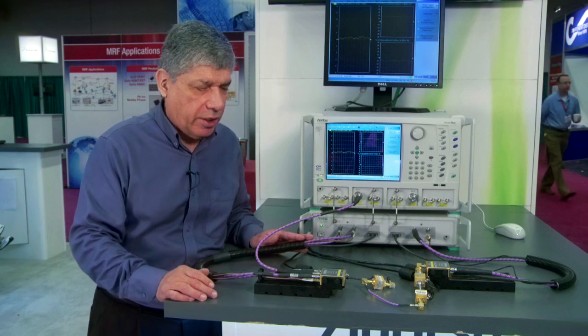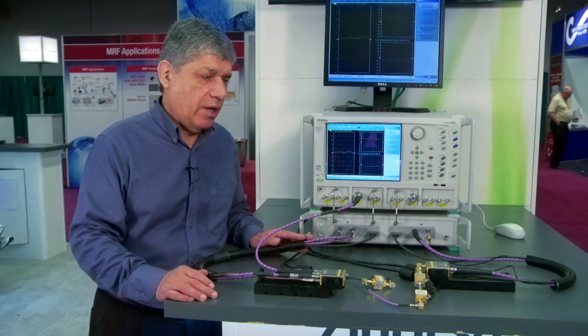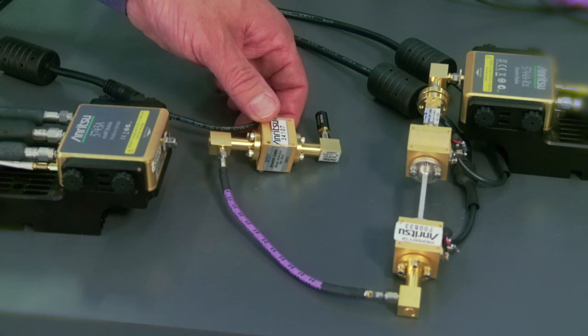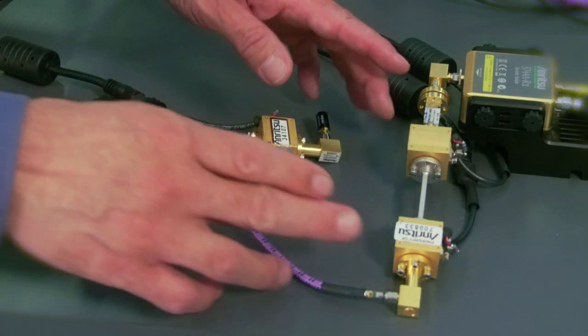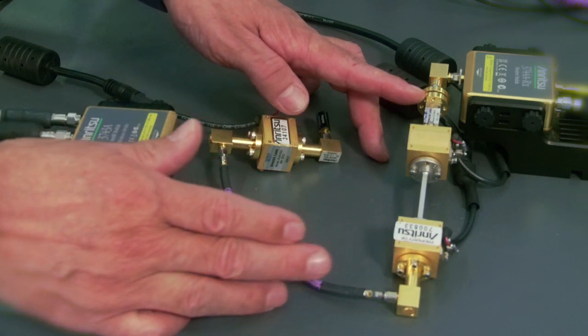So in this case, what we're showing is a 94 gigahertz noise figure measurement. The LNA is our test device, and then the two amplifiers are the preamps along with the filter before the receiver.